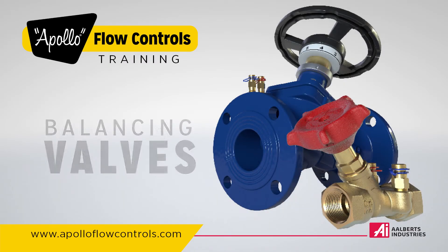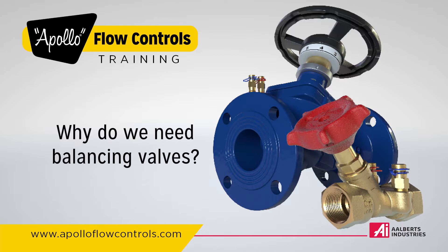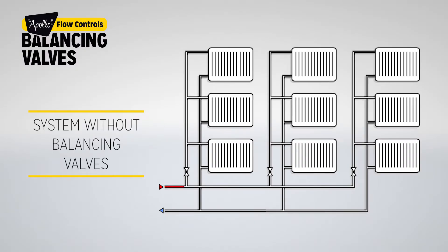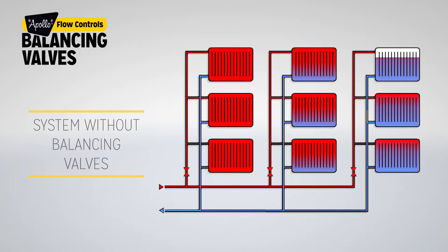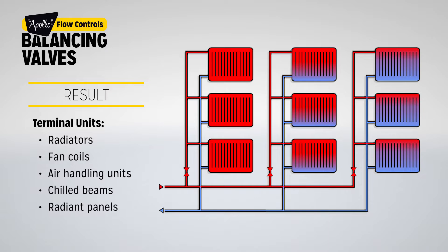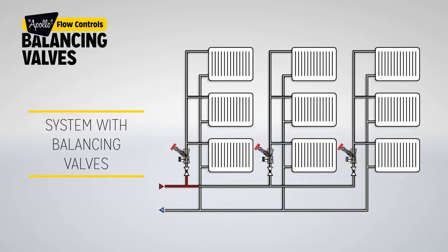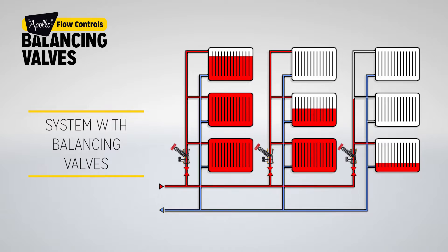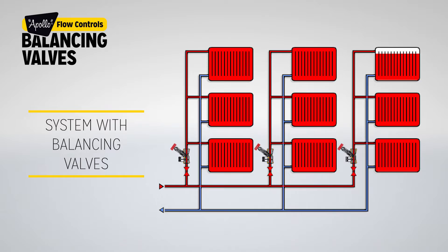Balancing valves: why do we need balancing valves? When the system is unbalanced, water takes the easiest path through the system where the resistance is lowest. Terminal units such as radiators, fan coils, air handling units, chilled beams, and radiant panels that are closest to the pump are provided with excess water flow, while units farther away from the pump receive insufficient flow. When balancing a system, flow distribution is changed so that critical circuits can be provided with the required flow, and the whole system is in balance.